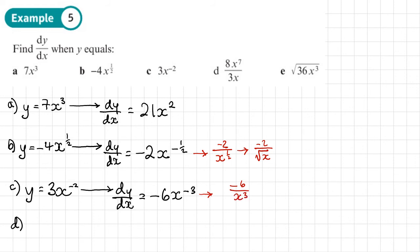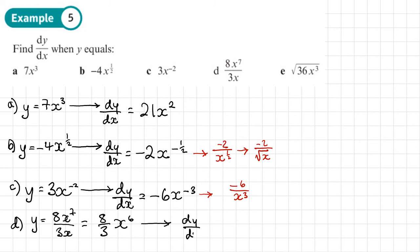Part d: y equals 8x to the power 7 over 3x. Simplify before differentiating — divide to get 8 over 3 times x to the power 6. Then dy dx: multiply 6 by 8 over 3, which gives 48 over 3 equals 16. So dy dx equals 16x to the power 5.